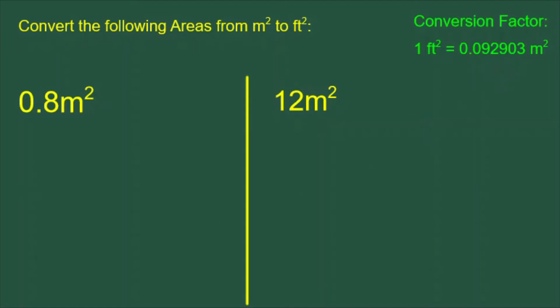What we need to do is build a proportion. Our proportion for 0.8 meters squared will look like this. We put the 1 and the 0.092903 together on the left. You can see that the 1, the feet squared, is on the top. The meters squared is on the bottom. Since our question is giving us meters squared, that 0.8 will go on the bottom, and we put an x on the top. We solve this with cross multiplication.